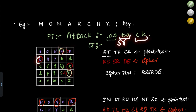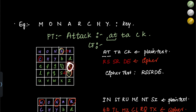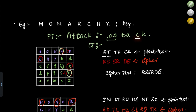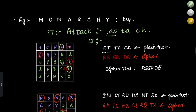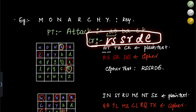Next pair is C and K. C is here, K is here — they are in different rows and columns. For C, the letter in C's row at K's column is D. For K, the letter in K's row at C's column is E. So CK encrypts to DE. The full cipher text for ATTACK is RS, SR, DE.